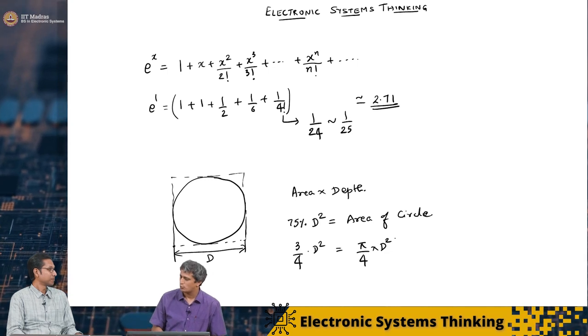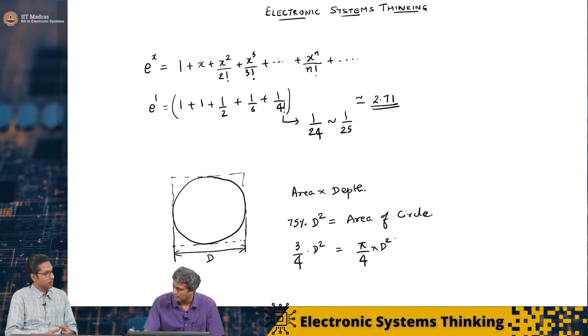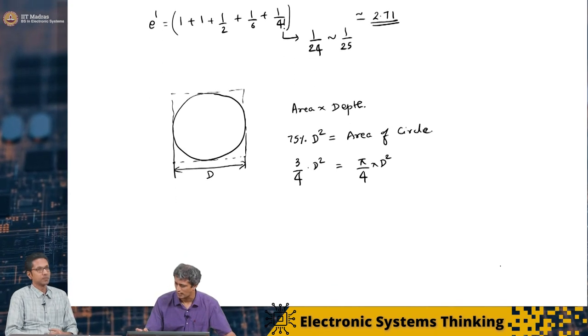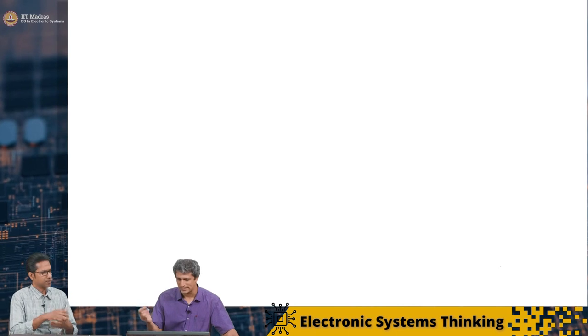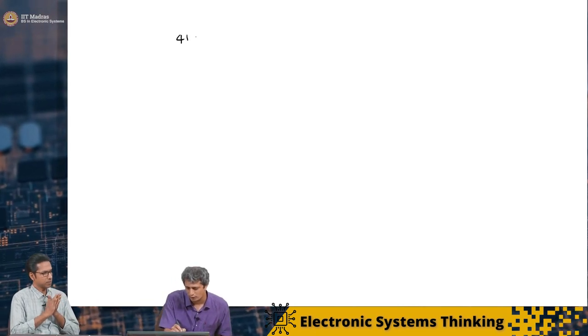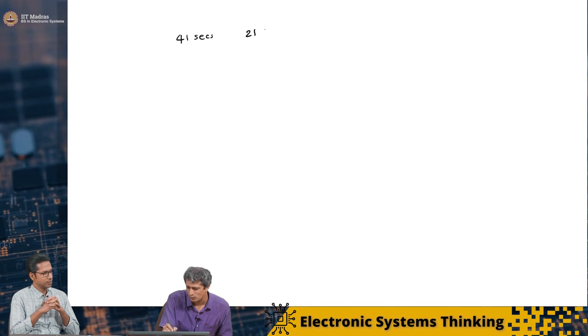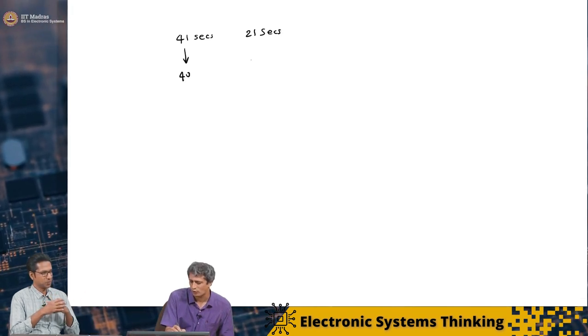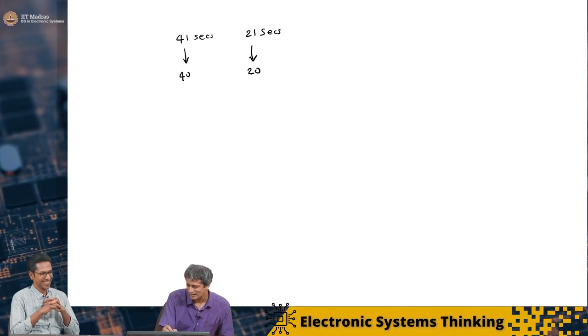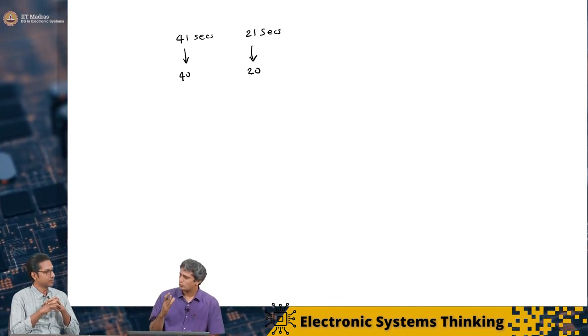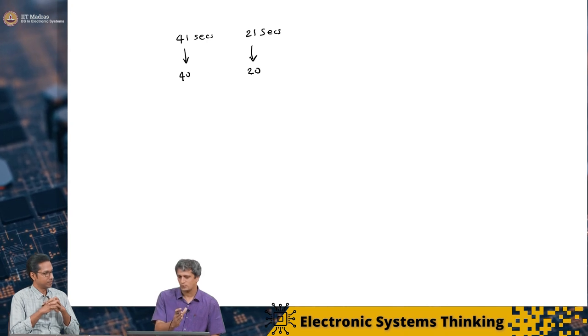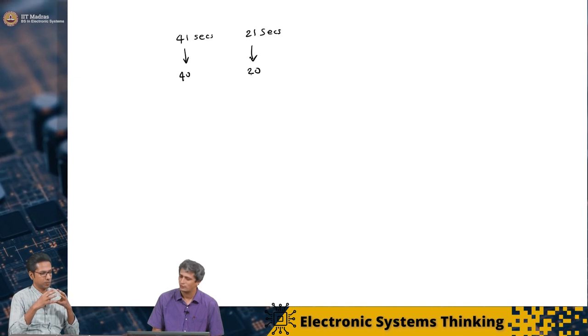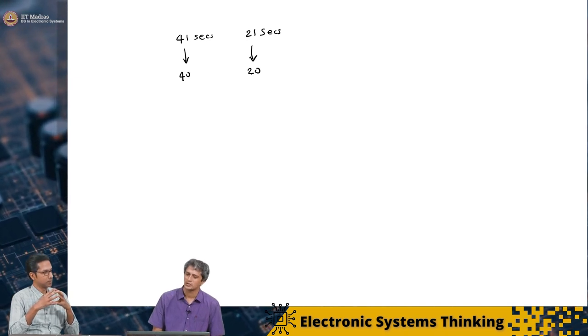Actually, now that you mention it, I do remember that we had actually got 41 seconds and 21 seconds. We made a measurement of 41 seconds and 21 seconds. But we approximated this as 40 and 20. So to the tens place, I think is all we were looking at. Not even the units place of time. Therefore, it is still a useful experiment and a correct experiment to do.